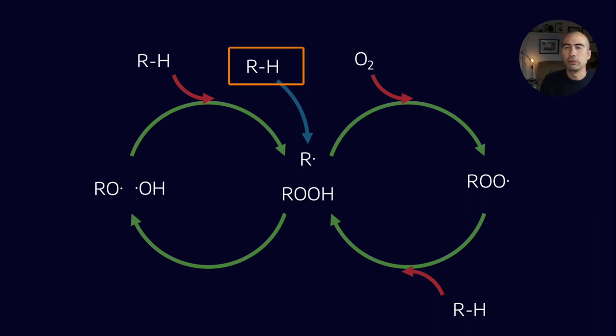For example, we could try to prevent the initial formation of free radicals. Free radicals are usually formed by excessive heat or temperature, electrostatic discharge, maybe nuclear radiation, something like that. And so by preventing that, we can prevent the formation of a free radical in the first place.